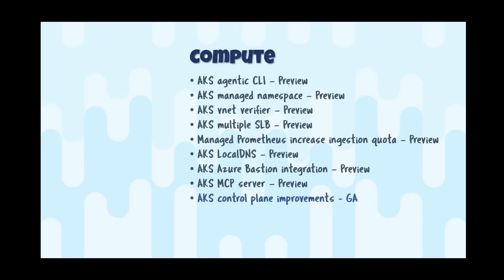AKS control plane improvements are now GA for Kubernetes 1.31.9 and higher, featuring streaming encoding for list responses. This gives roughly a 10x reduction in server memory used for large list calls. When performing list operations, the server previously had to allocate enough memory to hold the complete response — potentially gigabytes — until the client reads the whole thing.